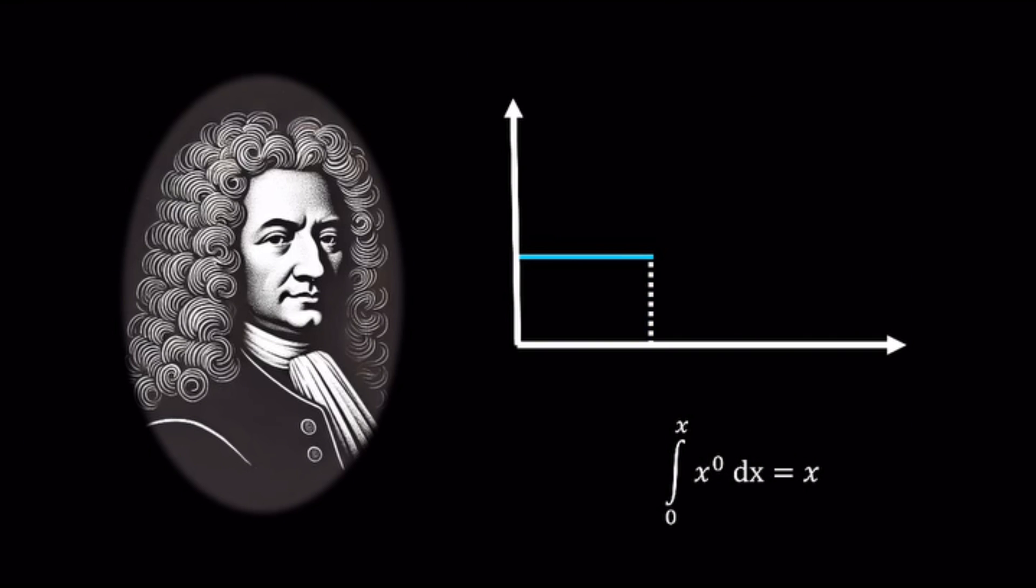Next, consider the function where x is raised to the power of 1. The area under this curve forms a triangle, which has an area of 1/2 multiplied by x squared. So the integral of x is x squared divided by 2.